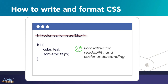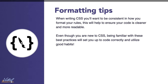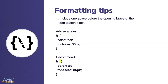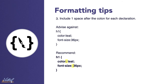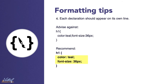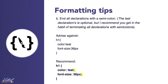Personally, I recommend that you use the tabbed indentation and separate lines. Your code will look neater and it will be much easier to locate things once you start creating long documents. Here are some additional formatting tips. You should include one space before the opening brace of declaration blocks for legibility. Place closing braces of declaration blocks on a new line. Include one space after the colon for each declaration. Each declaration should appear on its own line for more accurate error reporting. You should always end all declarations with a semicolon.